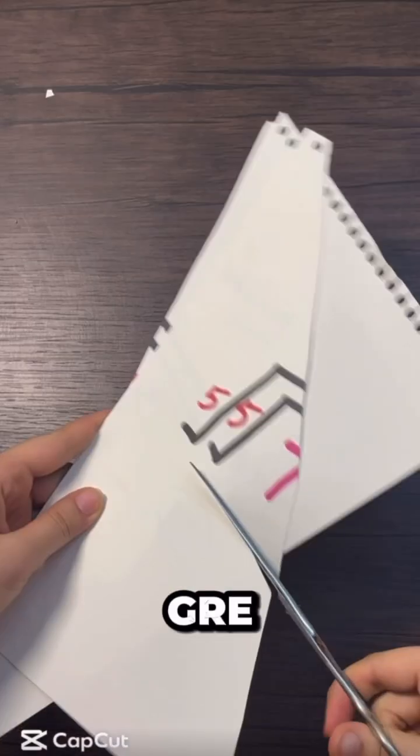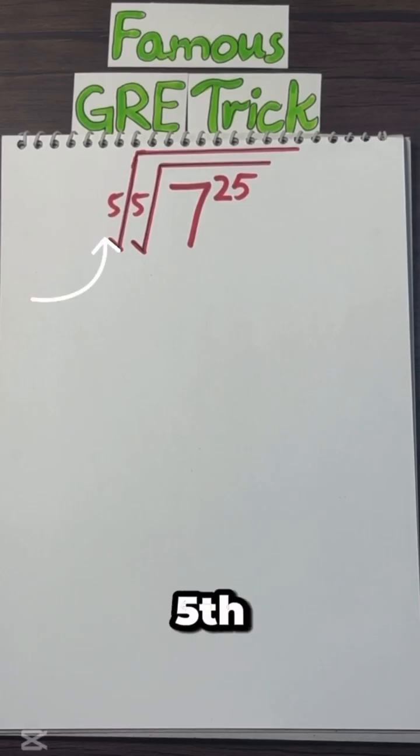Math teachers hate me for making this GRE problem so simple. It's 5th root inside 5th root. I can even read that! What the heck?